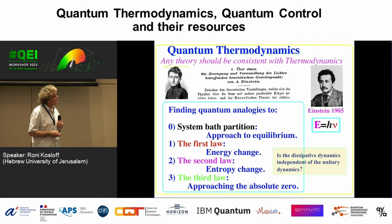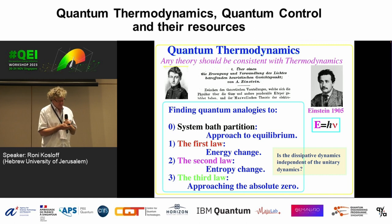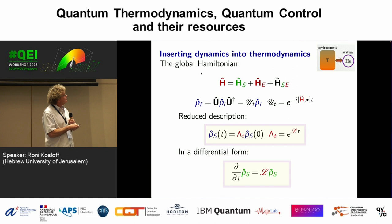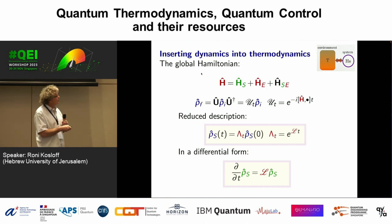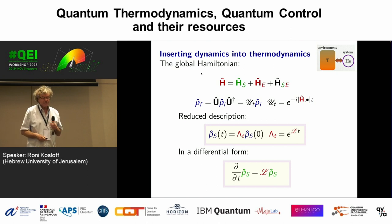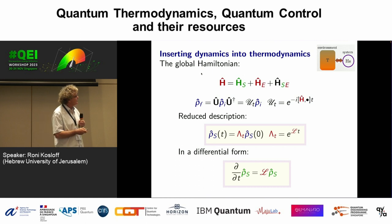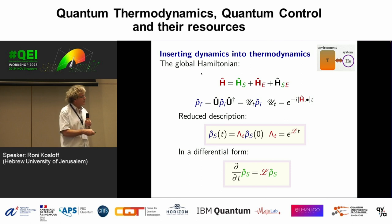The framework we use is quantum thermodynamics — with Carnot and Einstein as founders. I accept all the laws of thermodynamics. The Hamiltonian is written as system, environment, and coupling. I assume the world is unitary — there is a global unitary. I want a reduced description: an equation of motion of my system. The reduced description is a map with a generator — a Liouvillian — or in differential form, a quantum master equation. I use a Markovian assumption where the system and bath are a tensor product at all times.